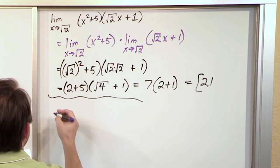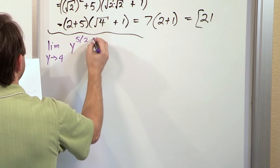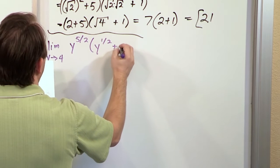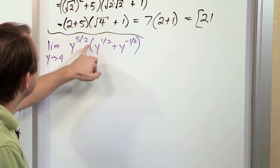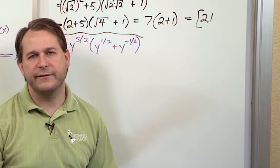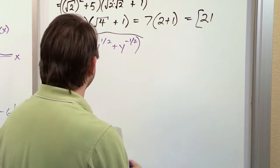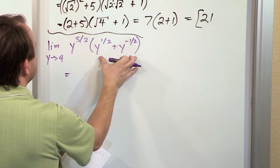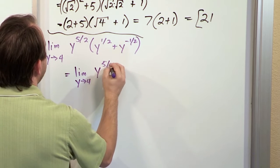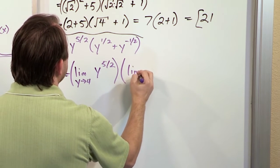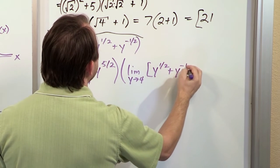Now let's do one that's just a touch more challenging. What if I have the limit as y approaches 4 of y to the 5 halves times y to the 1 half plus y to the negative 1 half? I love this problem because it looks really hard at first because of the fractional exponents everywhere. But then you realize fractional exponents are no different from regular exponents — they behave the same way. I basically have a function here times another giant function there, so I can multiply these limits together.